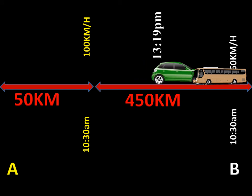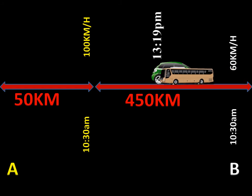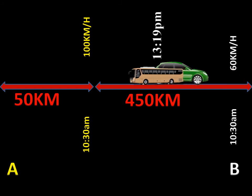As you can see, at 10:30 the car was moving towards B and at the same time the bus was also moving towards A. We find that the two vehicles are going to meet at 13:19. We have shown how to calculate the time taken for two vehicles moving in opposite directions to meet.